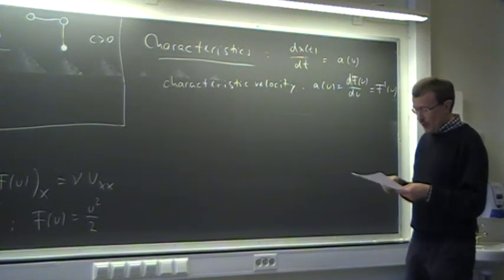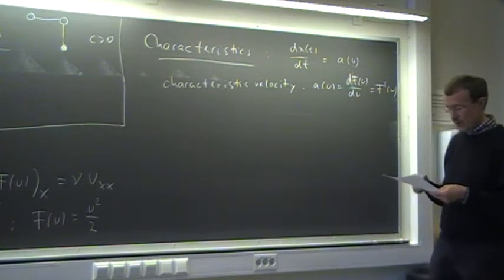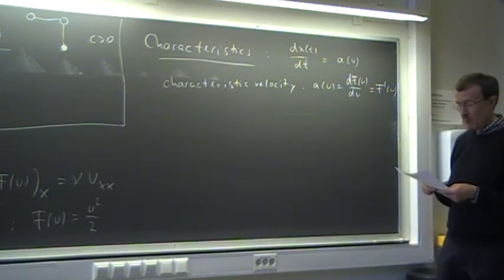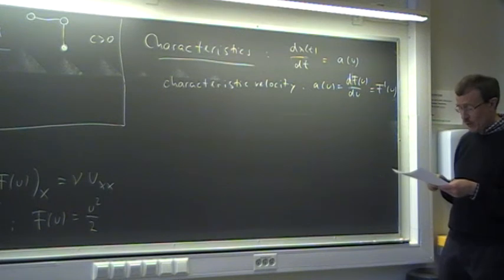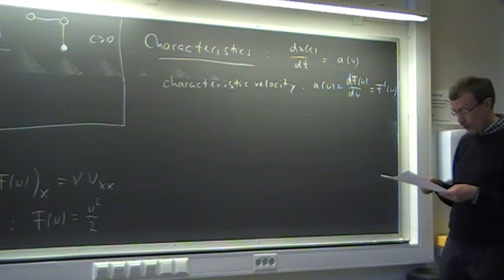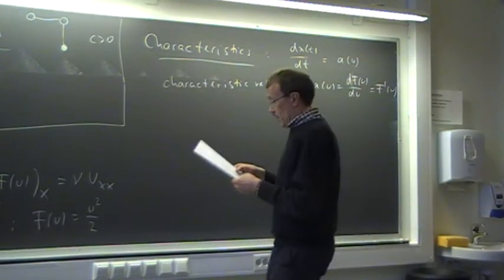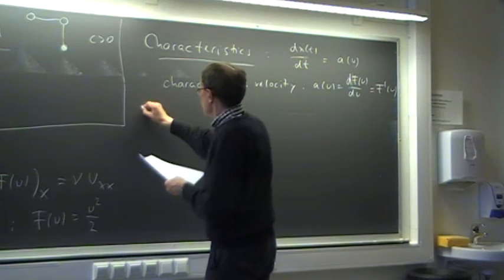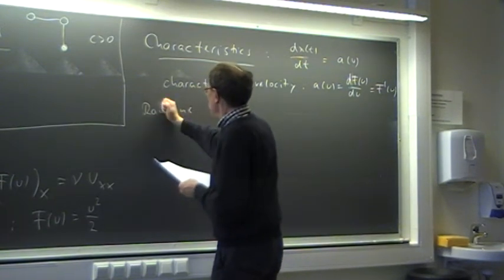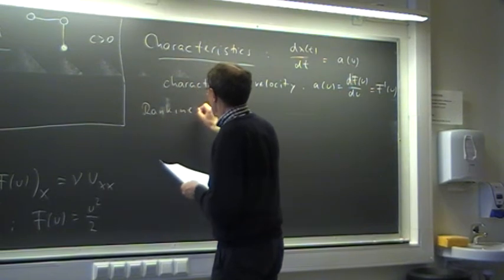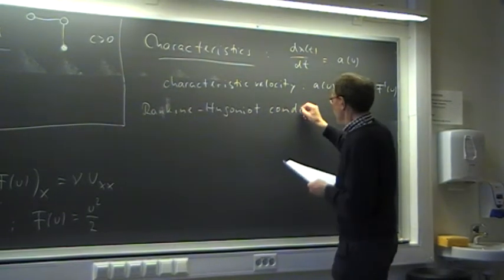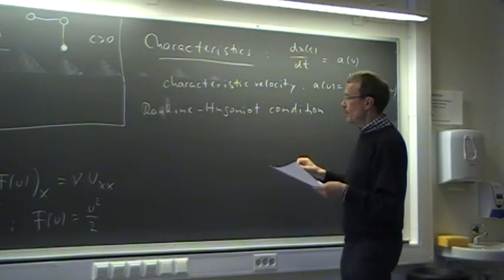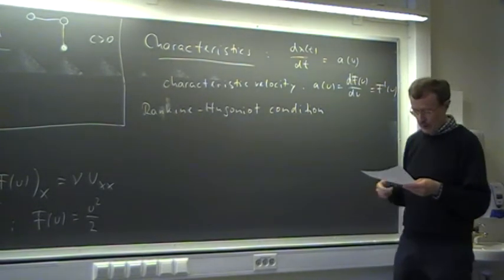We also looked at Riemann problems, where we have discontinuous initial conditions that are constant on either side of the discontinuity. There we could have either a shock or a rarefaction wave. We looked at the Rankine-Hugoniot condition — you should write that down as it is also part of the trial exam.